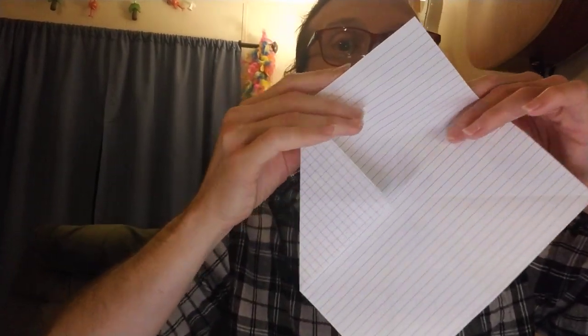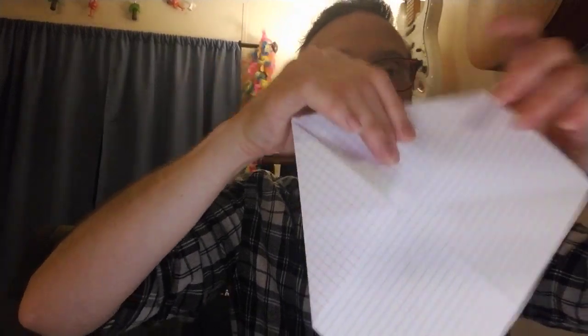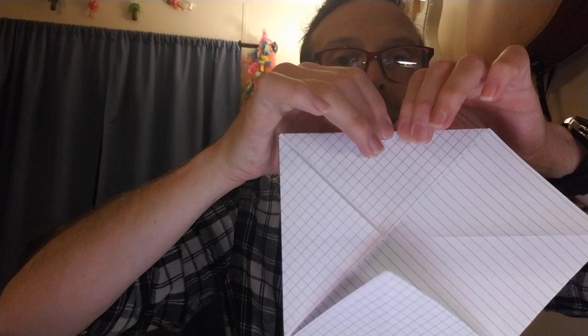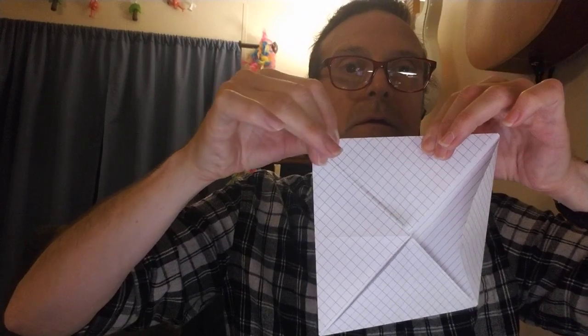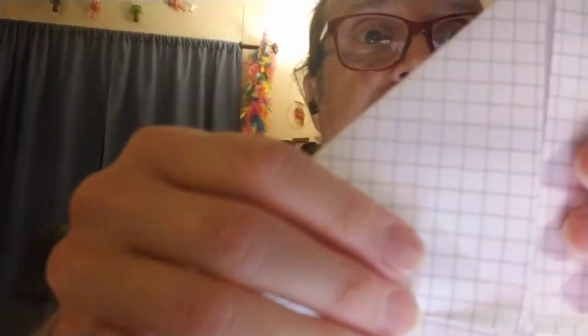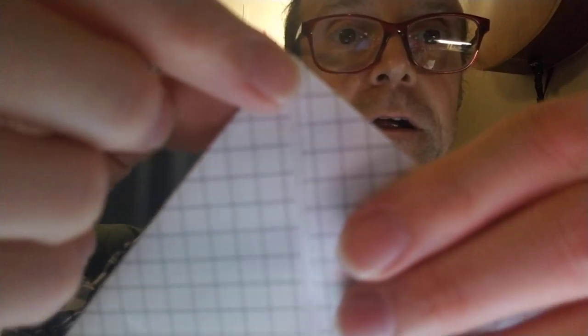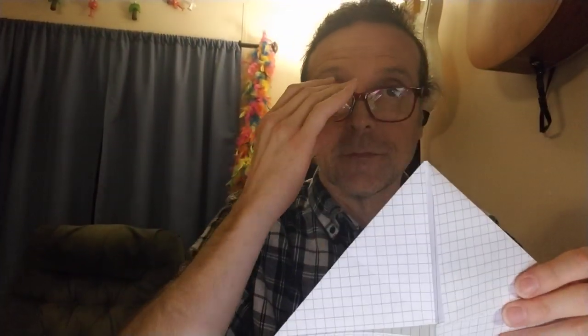And now I'm going to do the same thing to the remaining three corners. So that's one corner. Let's do the second corner. And now the third corner. And now the fourth corner. And in order to make this work, you do want to have a little bit of a gap here. See? So I didn't fold it exactly to the center but I folded it pretty close to the center. So this is where we are so far.